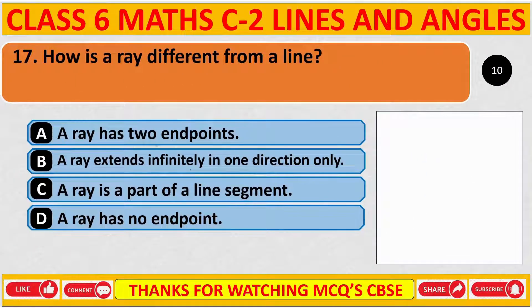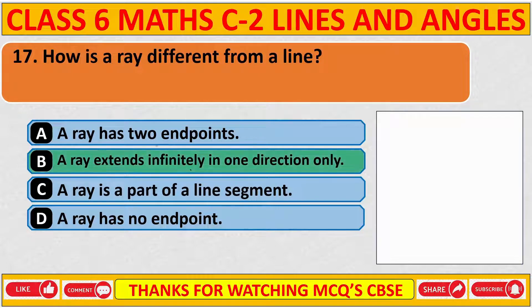How is a ray different from a line? The correct answer is B: a ray extends infinitely in one direction only.